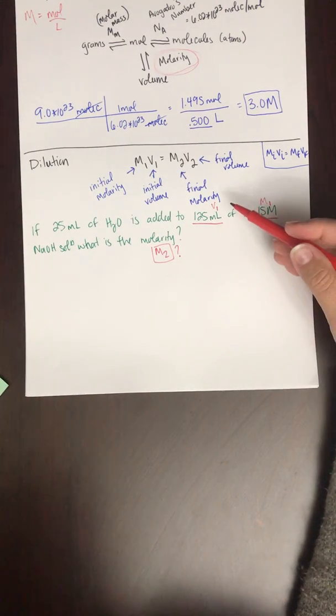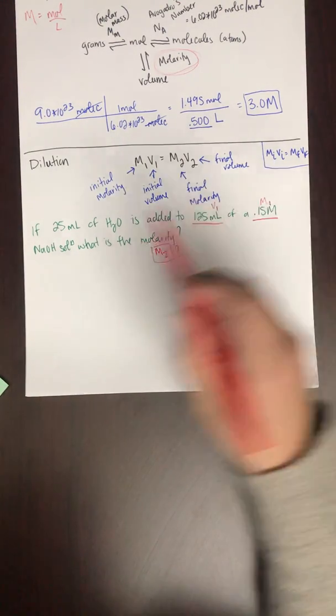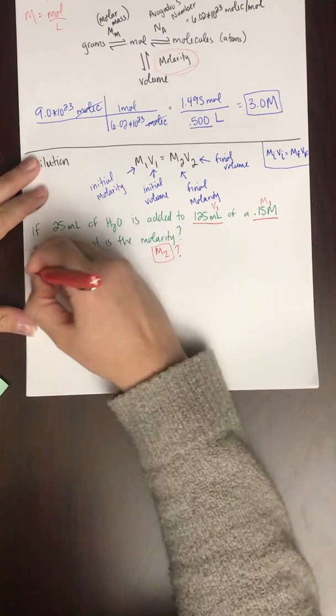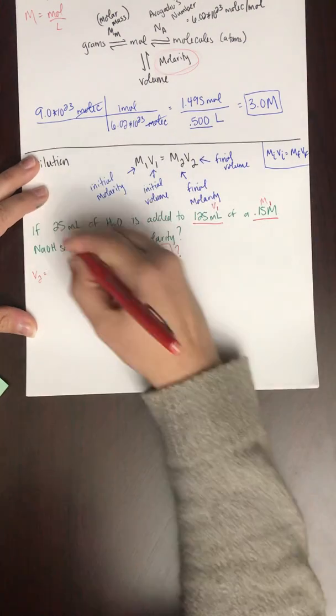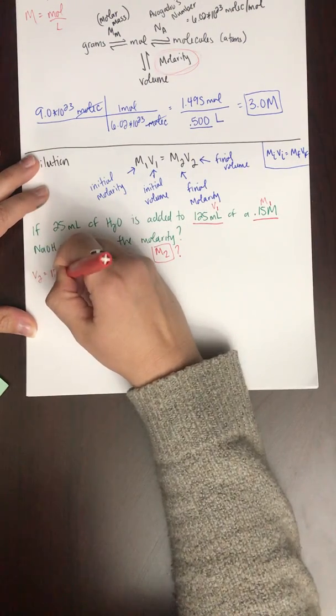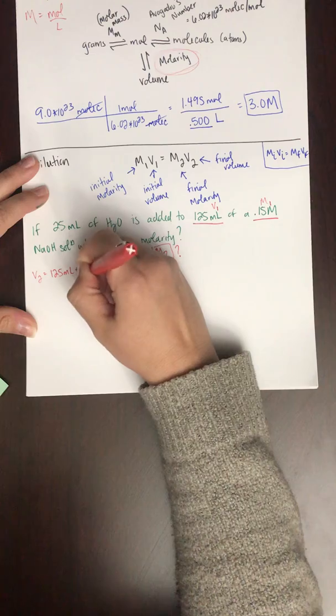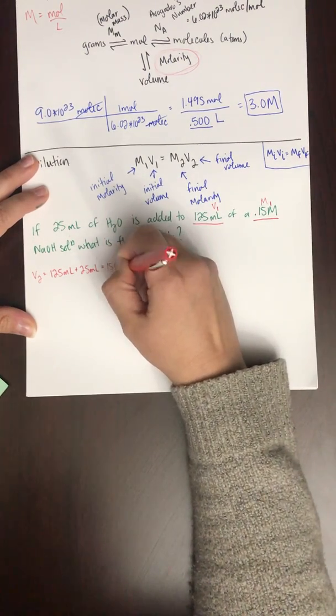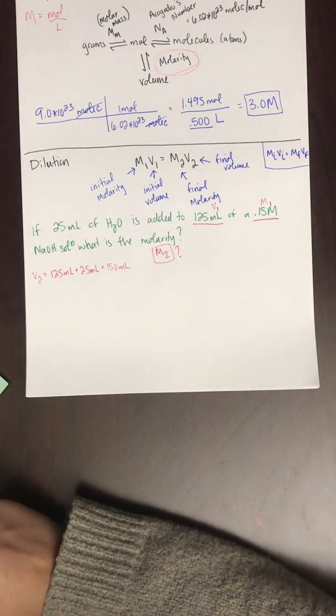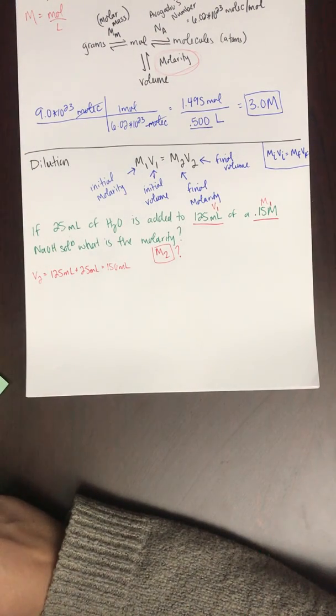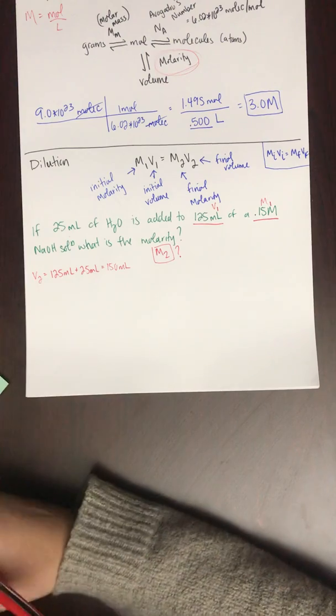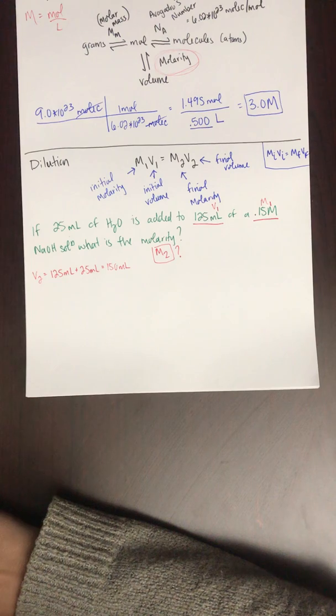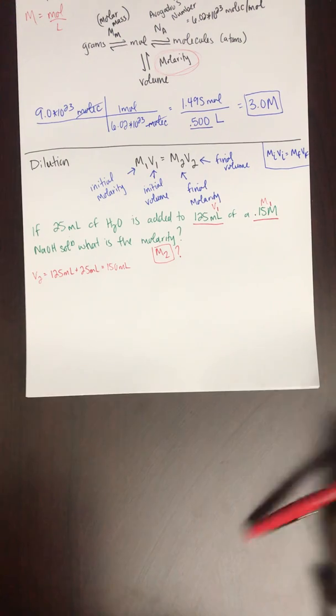But it doesn't give me V2. What it says is 25 milliliters of water is added. So the final volume, V2, is actually going to be 125 milliliters plus 25 milliliters. The final volume is going to be 150 milliliters. So sometimes these word problems don't come right out and say what each term is, but it gives you the information in the problem and then you just have to think about how to interpret it. So now I'm just going to plug this in: M1V1 equals M2V2.